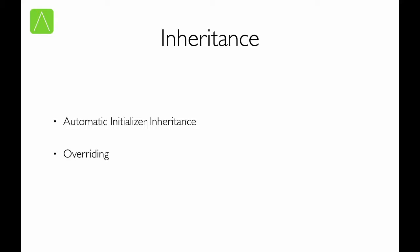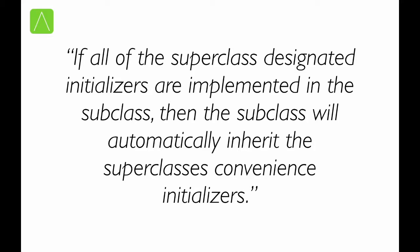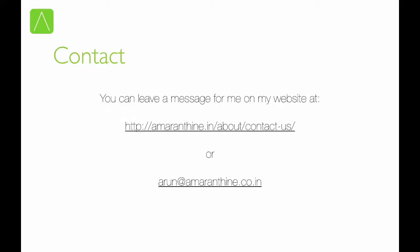When it comes to inheriting initializers, there are two ways in which that can be achieved. Initializers are automatically inherited when the subclass does not define any designated initializers, or if all the superclass designated initializers are implemented in the subclass, then the subclass will automatically inherit the superclass convenience initializers. You can always use the override keyword to override initializers provided in the parent class. In most cases, inheritance of initializers may not be required as you may want completely different initializers for your subclass. And that was a brief overview about initializers in Swift. Thank you and see you again.